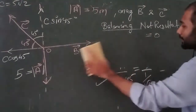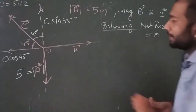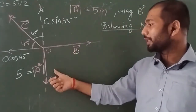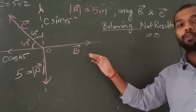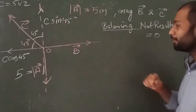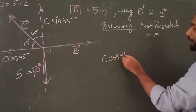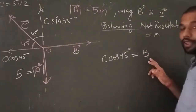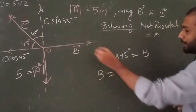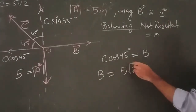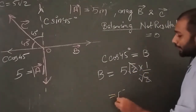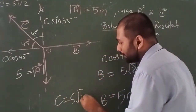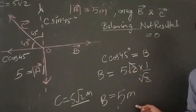Now for vector B: since vectors A and B are perpendicular, the component of A along B is zero. So only the horizontal component of C, which is C·cos45, balances vector B. Therefore B = C·cos45 = 5√2 × (1/√2) = 5. That is how we solve using the resolution of vectors.